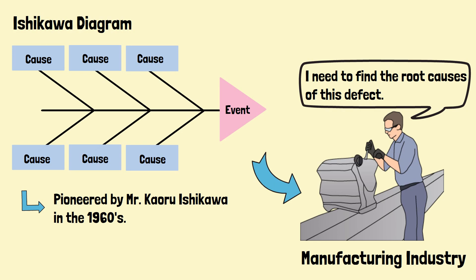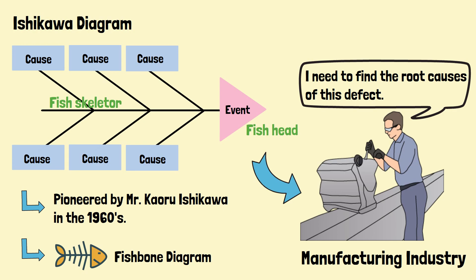The Ishikawa Diagram is also known as Fishbone Diagram due to its pictorial presentation, which has the event as the fish head and the causes on the fish skeleton. The causes are usually grouped into categories. The default categories are 6M, which comprise manpower, machines, materials, measurement, mother nature, and method.